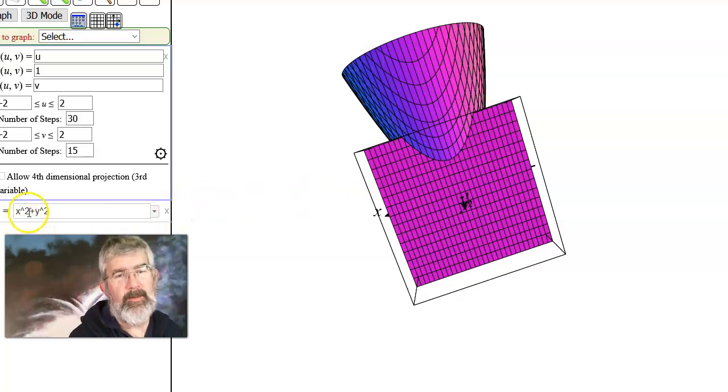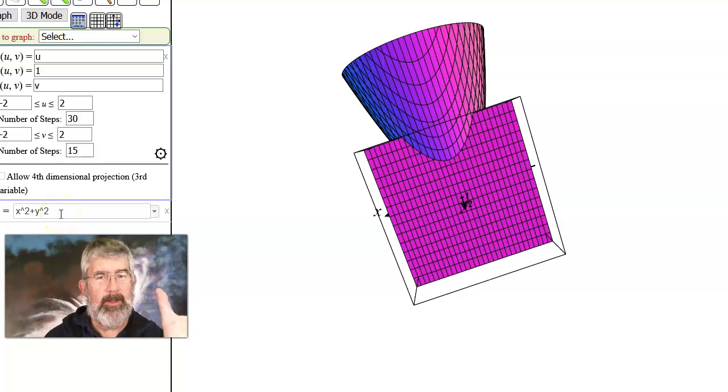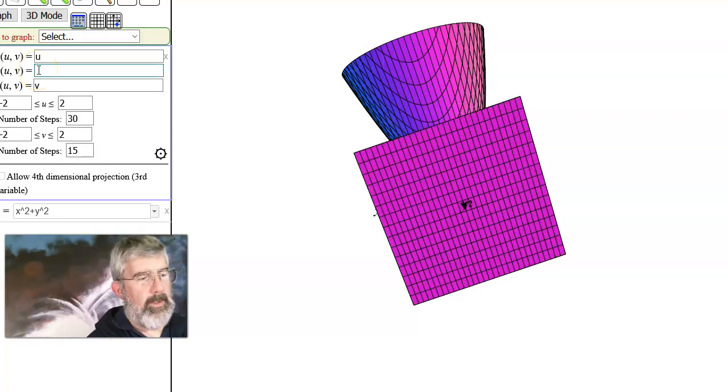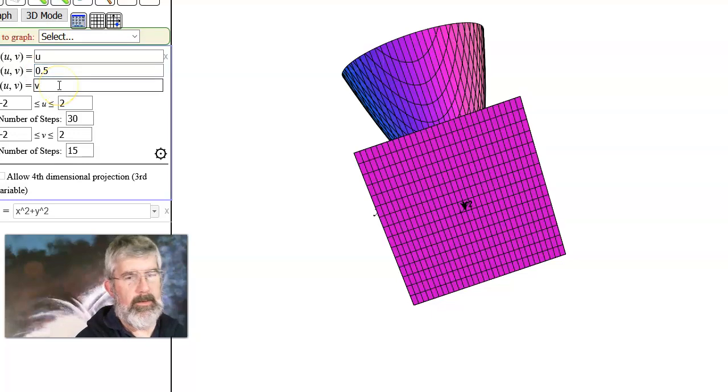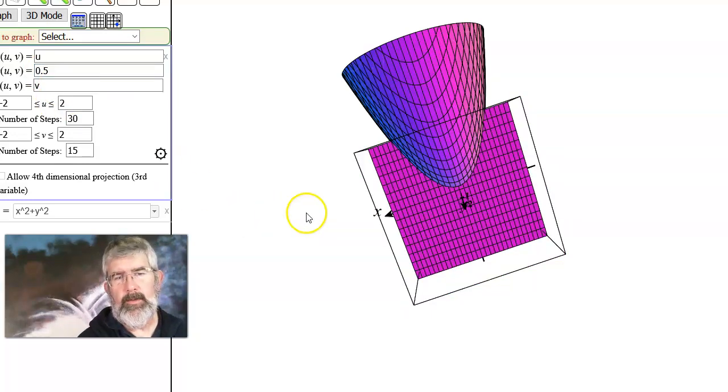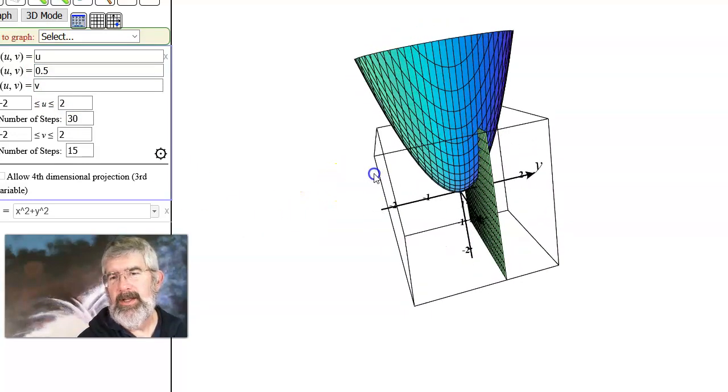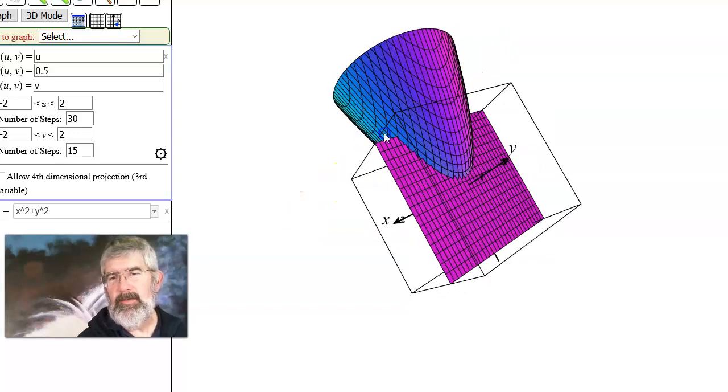I mean, if I had z equals x squared plus 1, I know that z equals x squared would be a parabola. And then the plus 1 just shifts it up 1. So if I say y equals 0.5, then you can see that's a different parabola. Well, that would be x squared plus 1 half squared or x squared plus a quarter. So it would be a parabola shifted up.